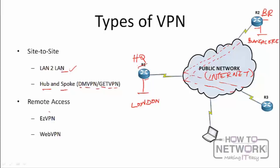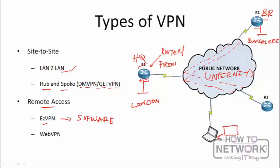The other type is the remote access VPN, which includes Easy VPN. With Easy VPN, you download a VPN client software from Cisco's website to a local machine, and configure a VPN server on a Cisco router or firewall. Anyone who wants to connect installs the VPN client and remotely connects to the hub on demand. When they're done, they disconnect and the VPN session is torn down.